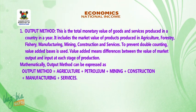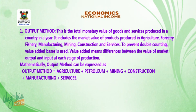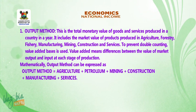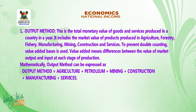1. Output method. This is the total monetary value of goods and services produced in a country in a year. It includes the market value of products produced in agriculture, forestry, fishery, manufacturing, mining, construction, and services. To prevent double counting, a value added basis is used.